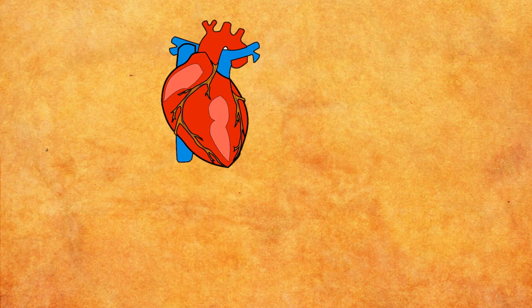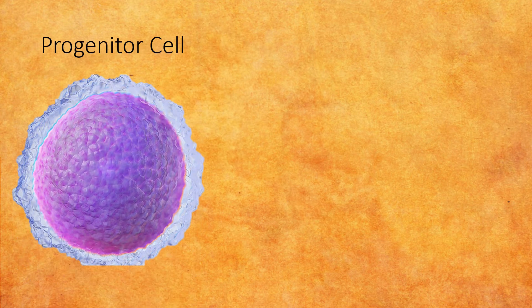Cellular cardiomyoplasties are a more modern solution. They involve injecting progenitor cells into the myocardium, or heart wall. Progenitor cells, like stem cells, can differentiate or transform into a specific cell type.